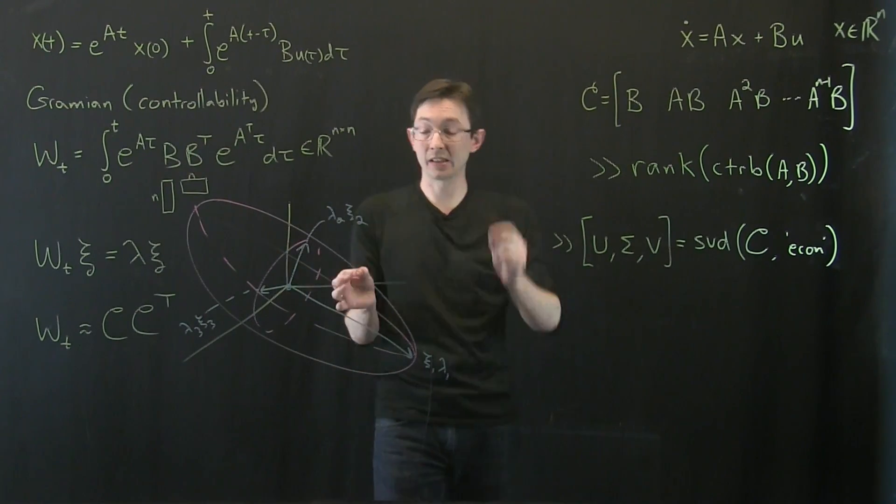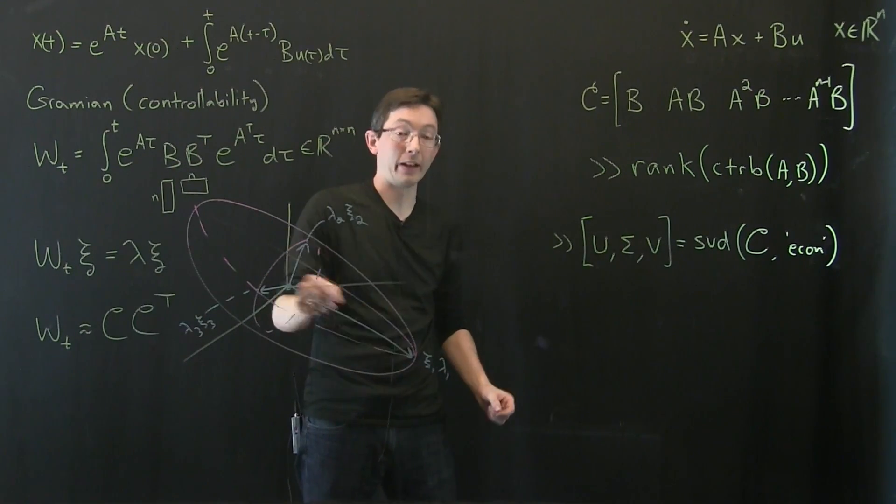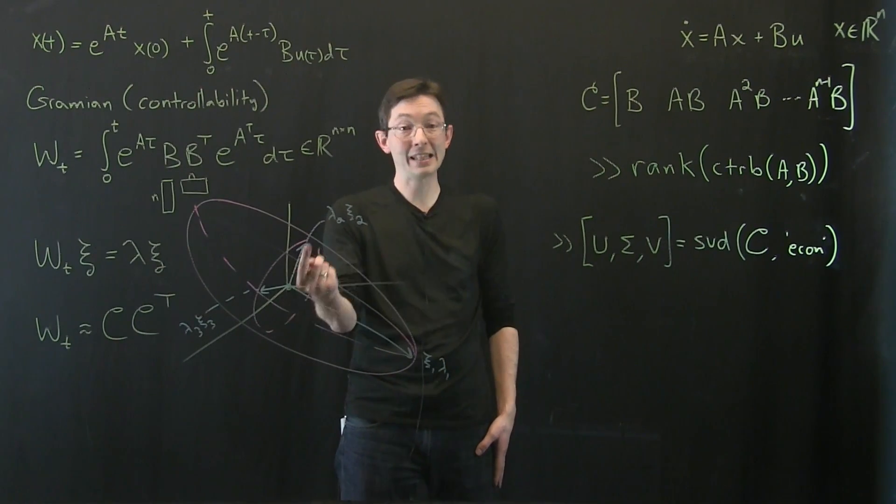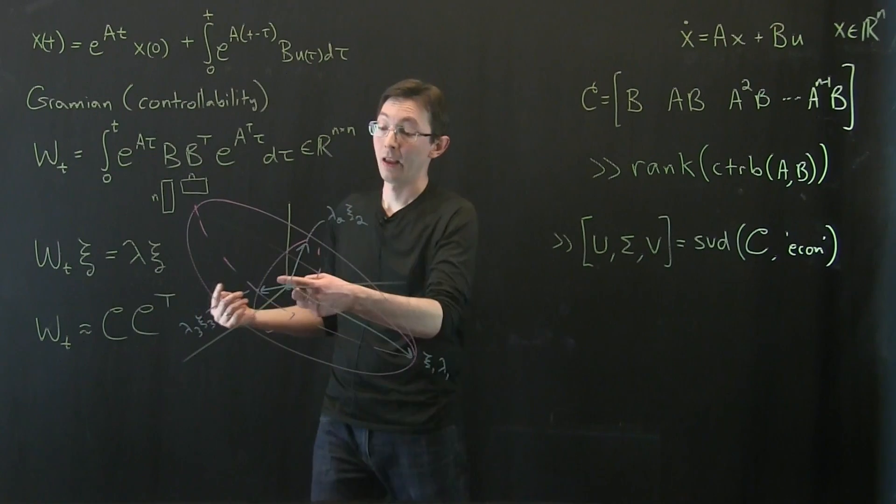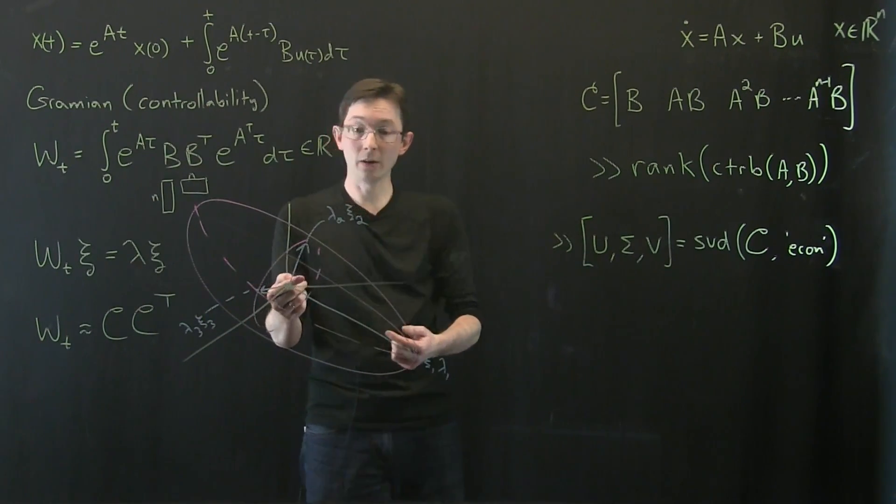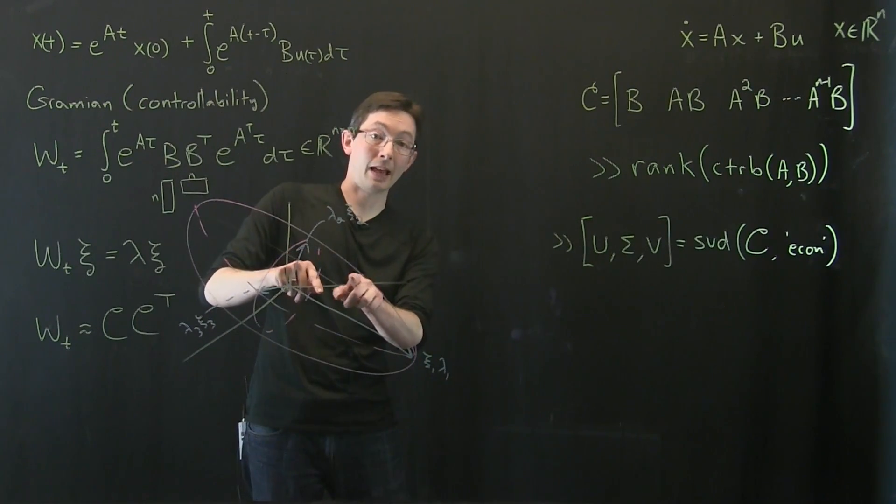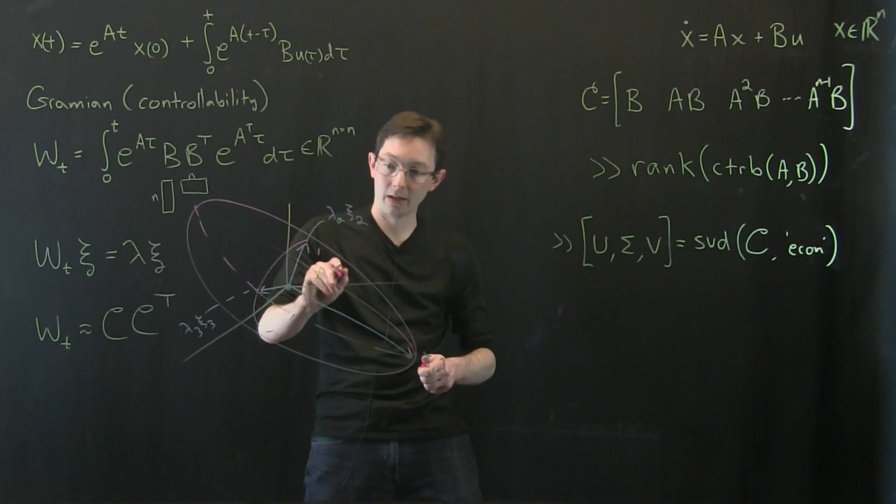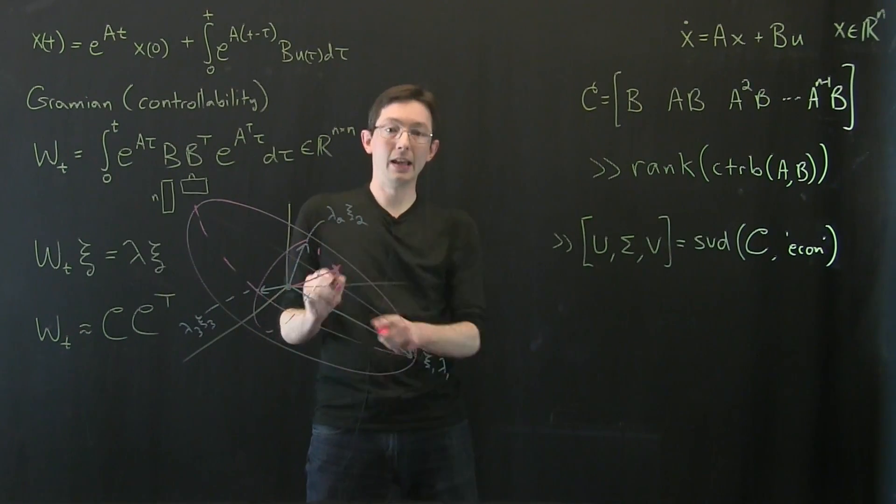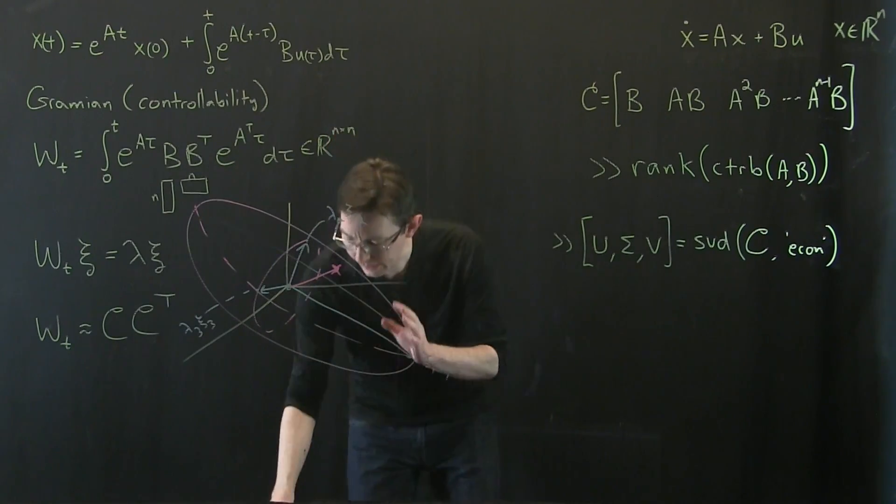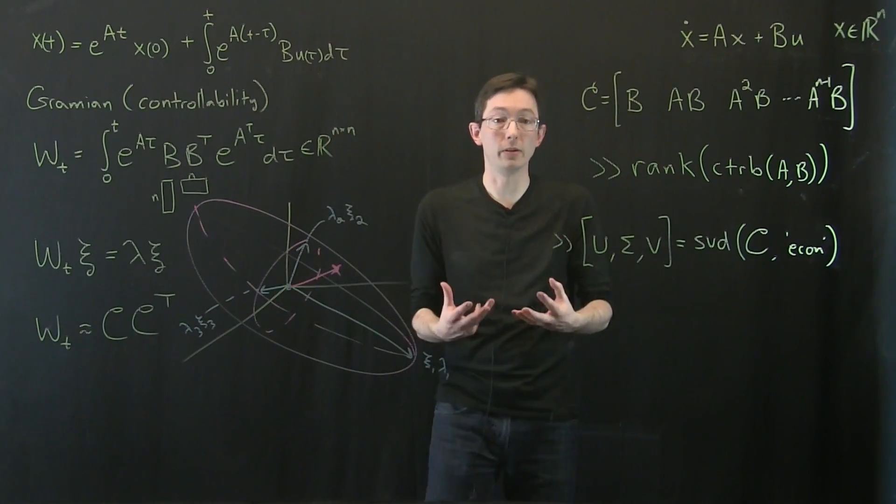So I can steer my system around, but I can steer it farther if I go just in the xi1 direction. I can steer it less far in the xi2 direction, and I can drive it the least far in the xi3 direction. And if I go in some combination, I'm going to land at that point on this ellipsoid. So if I go in some direction here, I'm going to hit, I'm going to run out of gas at that point. So this is incredibly physical and intuitive.